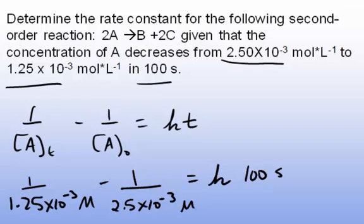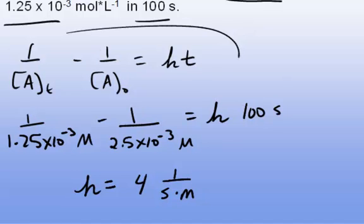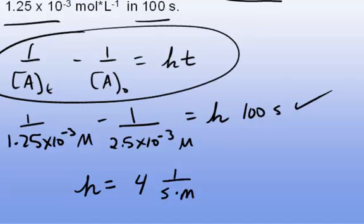The value of k when you do the math is 4, and the units are M⁻¹s⁻¹, or inverse molar inverse second. You can see if you know the integrated rate equation, you can find information very quickly and easily.